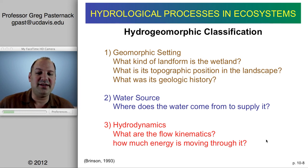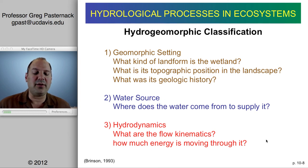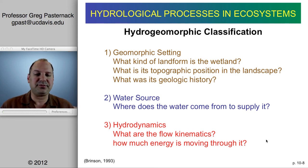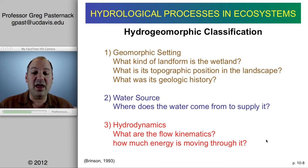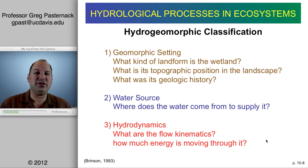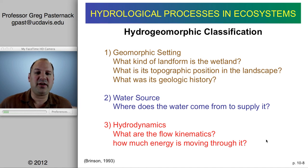The landform could be a delta or estuarine type of setting. Second, what is the topographic position in the landscape — at the top of a mountain, on hill slopes, in a hollow, in a valley or floodplain, or down by the ocean? What was its geologic history? This could involve rates of uplift or exposure to different sedimentary layers that might express hydrologic controls.